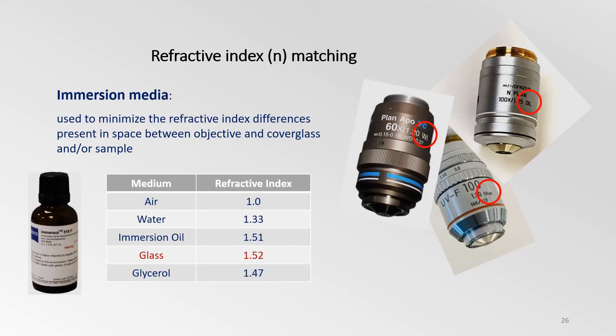Objectives that are designed to be used with oil, water, or glycerin increase the NA because refractive index differences between the objective lens and the cover glass or sample are largely minimized. Refractive index matching is an important factor to consider in optical microscopy, especially when working towards getting high resolution three-dimensional images.